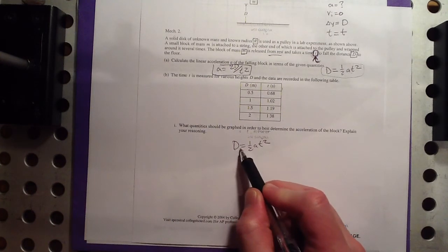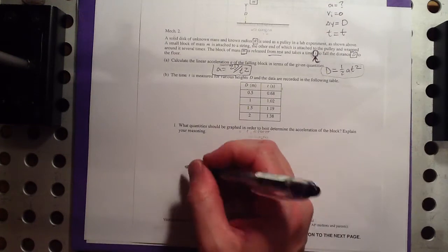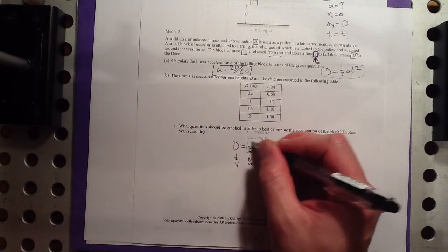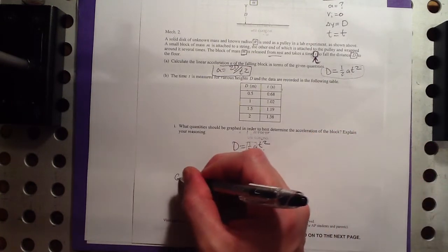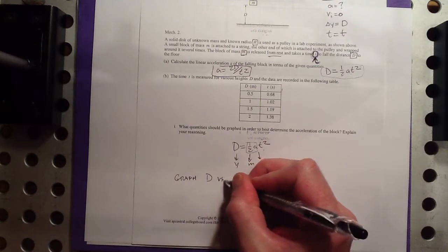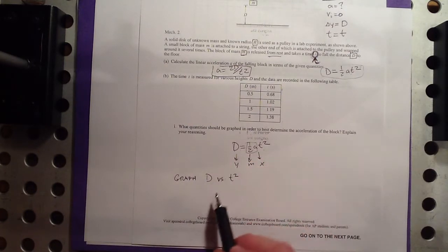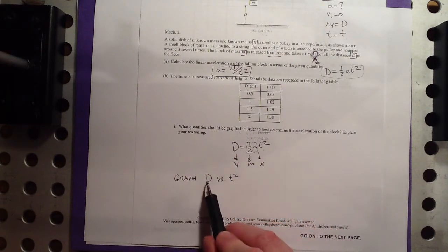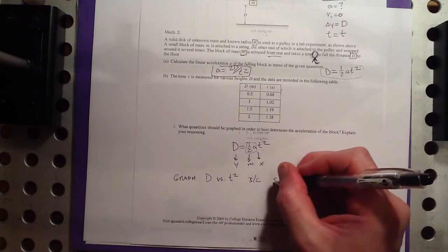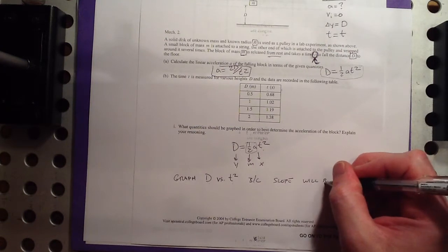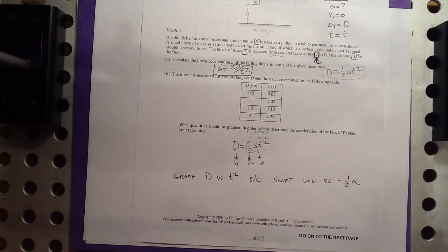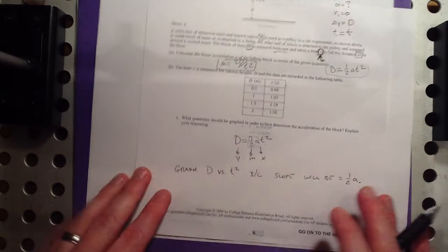So my reasoning would be if I graph this like Y equals MX. So graph D versus T squared. Remember, this always comes in the order: Graph Y versus X, right? YX first and then X, dependent and independent. And because slope will be equal to 1 half A. So that's all you need to say for the reasoning. It's not the only correct answer, but I think that's the best one.